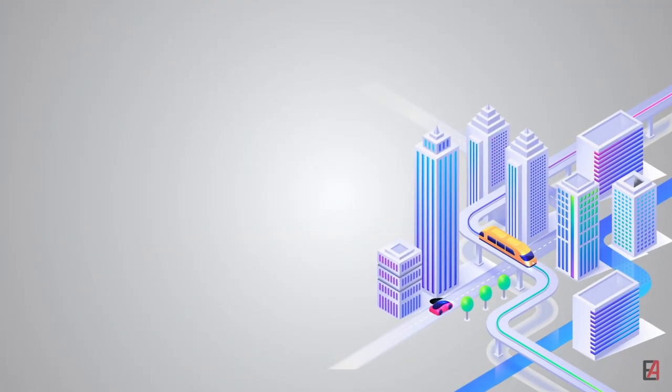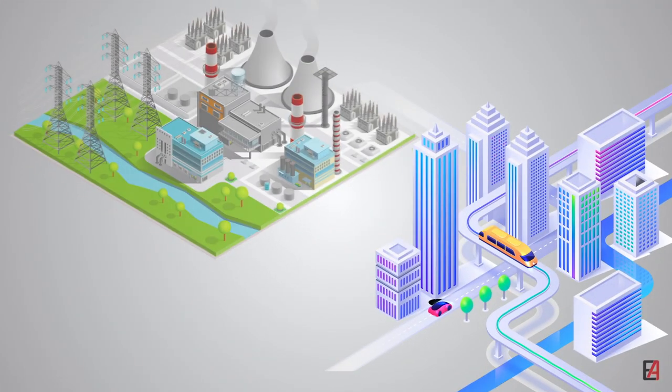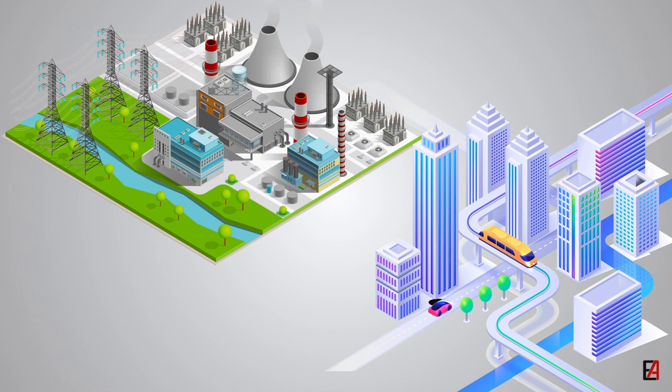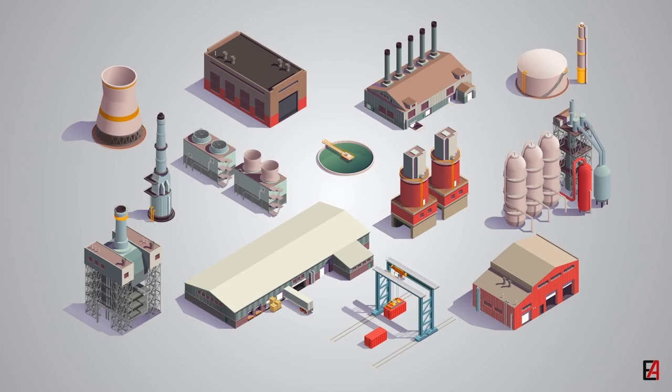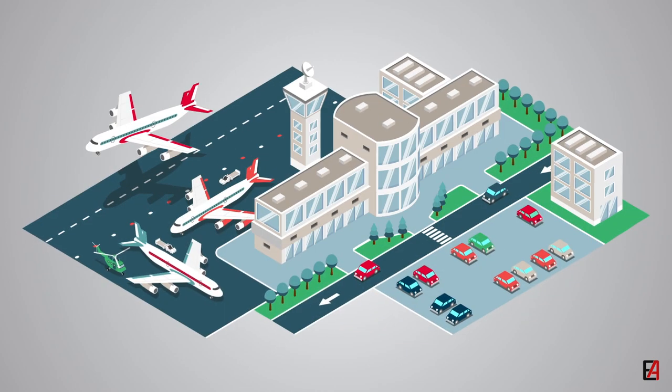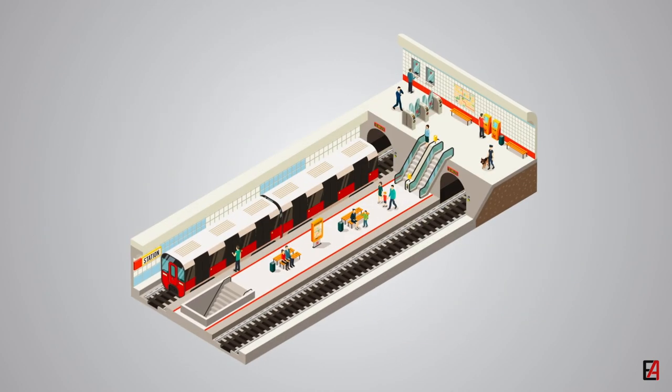Automatic control system plays an important role in the development and advancement of modern civilization and technology. It is widely used in numerous industrial applications such as manufacturing, automation, space technology, transportation, robotics, etc.